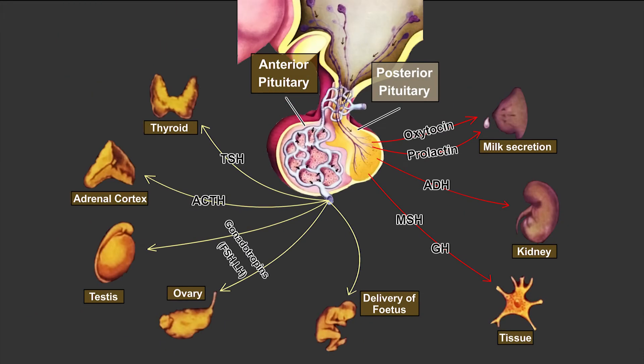Another major physiological role of oxytocin is the secretion of milk from the lactating breast. Oxytocin stimulates the myoepithelial cells which surround the alveoli and the ducts of the mammary glands.